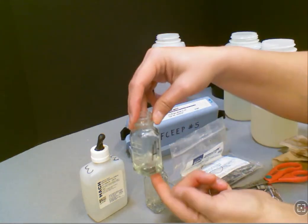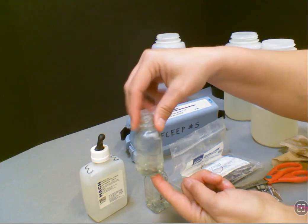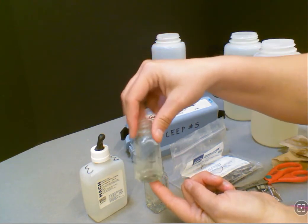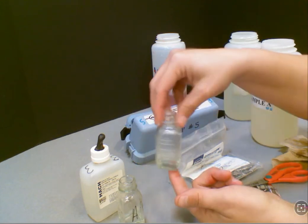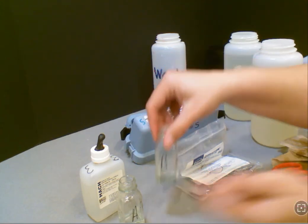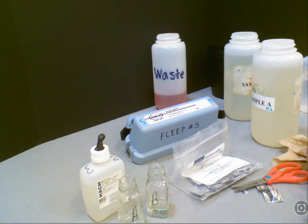After you've poured in your phenolphthalein, you're going to swirl both sample A and sample B until the contents are mixed. At this point, your instructions will state if it remains colorless, jump to step 6. This is fairly normal in this area, so don't be alarmed if it's clear.